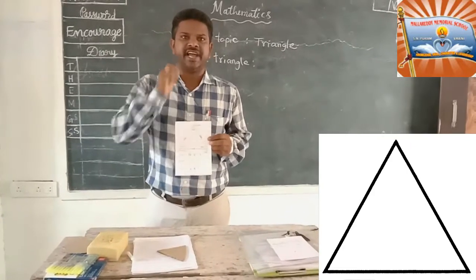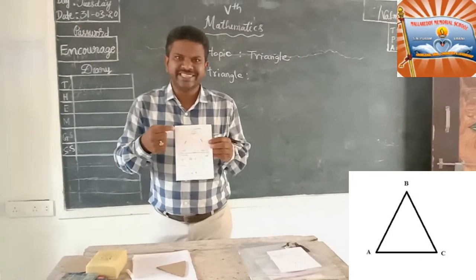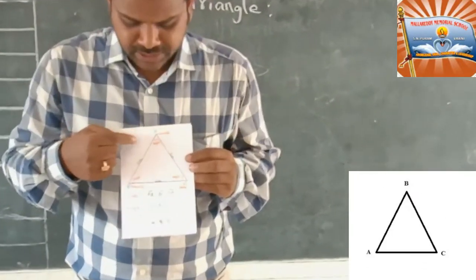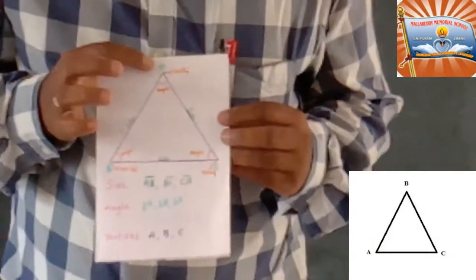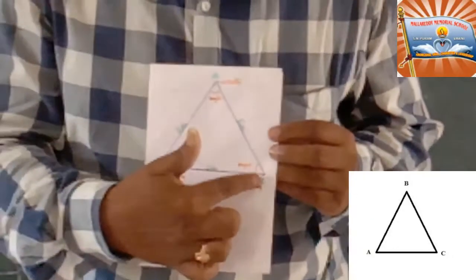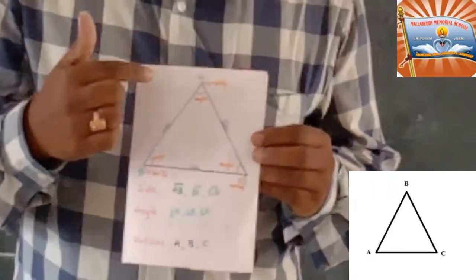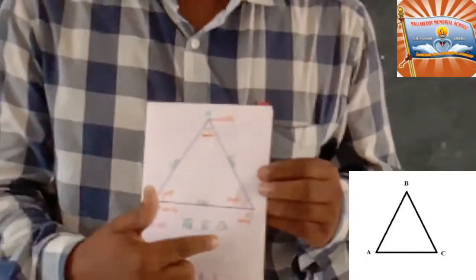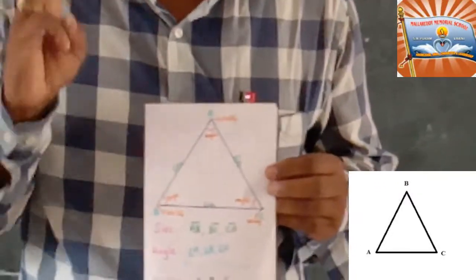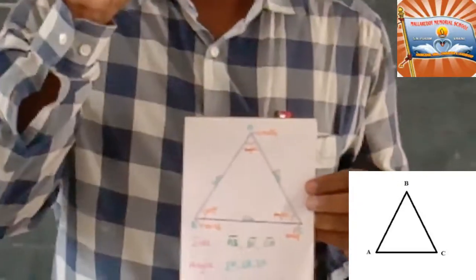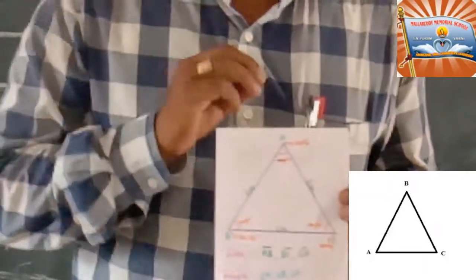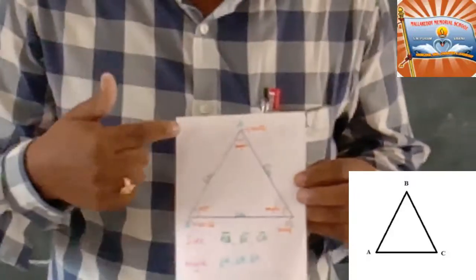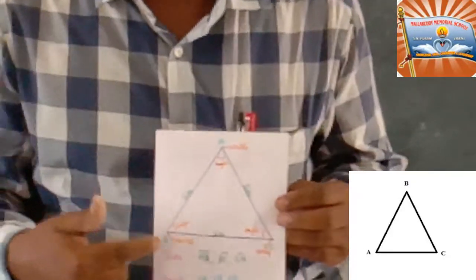We can see the picture in triangle ABC. Here, in this triangle, there are three sides, three angles, three vertices. Let us see three sides in this triangle.